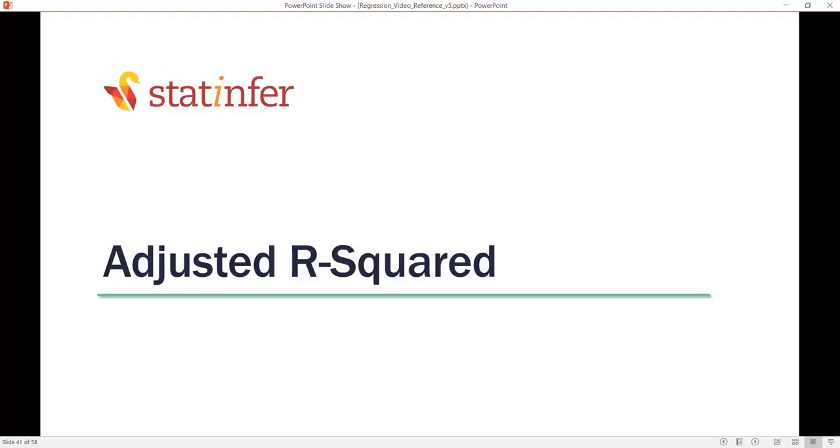By now, you might have observed this value, adjusted R-square. Whenever you look at the summary of the output, you are always looking at R-square and there is one more value called adjusted R-square. What exactly is this adjusted R-square?